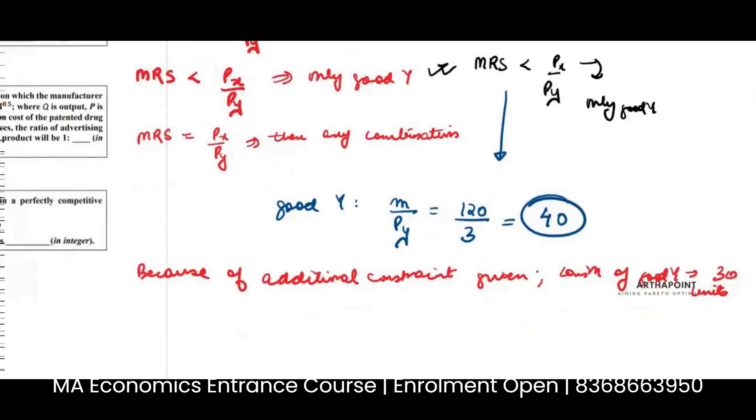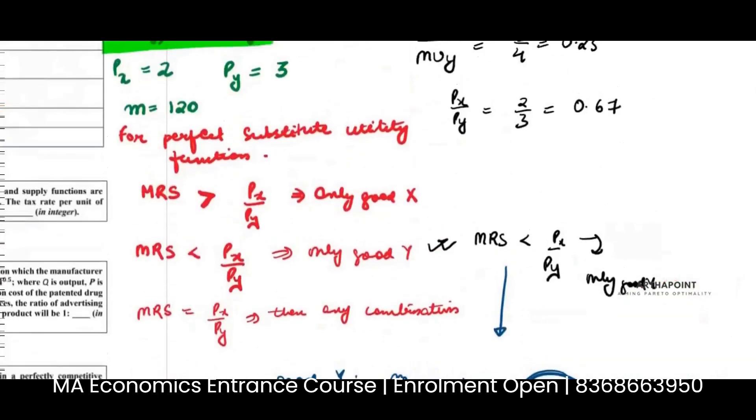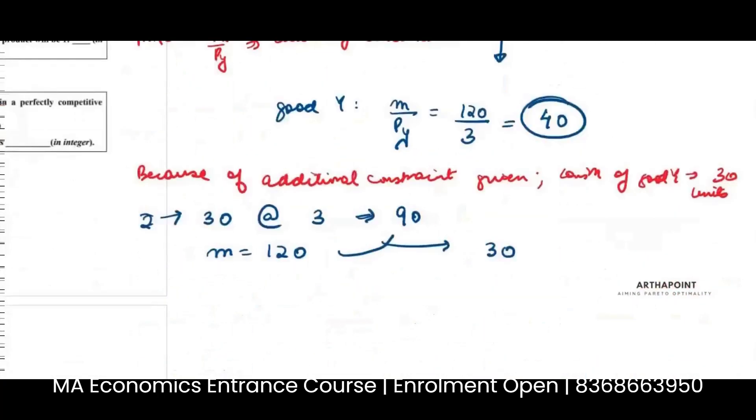So, if I consume 30 units, each at the rate of 3 rupees, I am spending 90 rupees on good Y. My total income is 120. My remaining income is 30 rupees. Each unit of good X costs 2 rupees, and I have 30 rupees with me remaining. So 30 divided by 2 will be 15 units. So I will get 15 units of good X and 30 units of good Y.